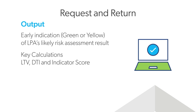Traditional LTV and debt ratios are returned, along with the indicator score. Like LPA, Risk Check returns feedback messages that define the top factors that impacted the assessment result.